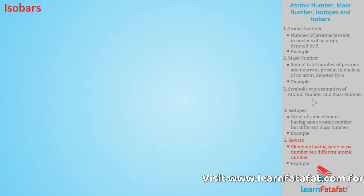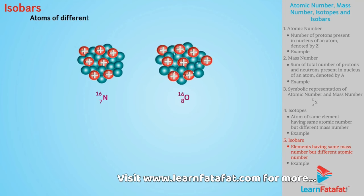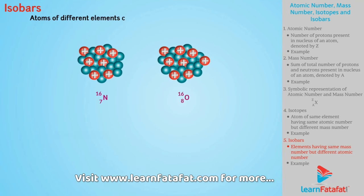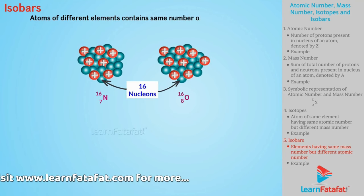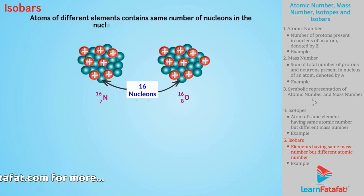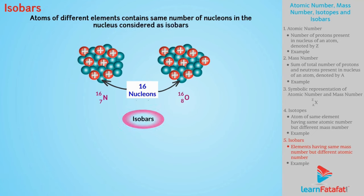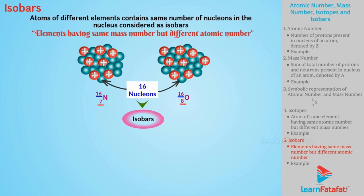Isobars: if atoms of different elements contain the same number of nucleons in the nucleus, then they are considered isobars. Isobars can be defined as elements having the same mass number but different atomic number.